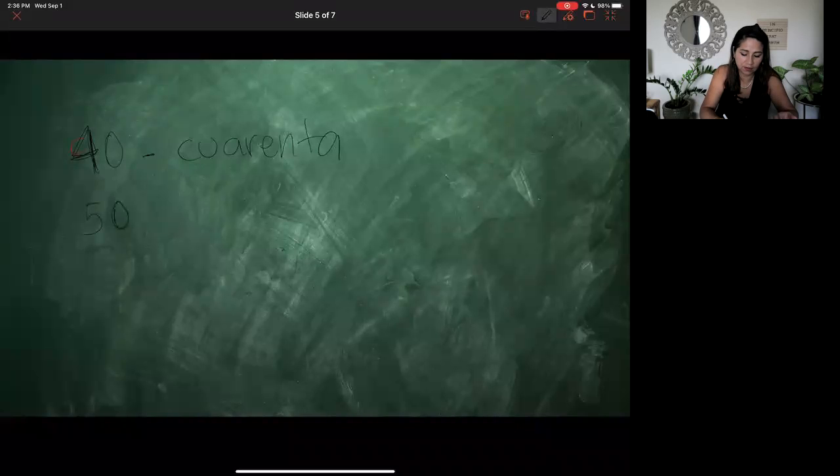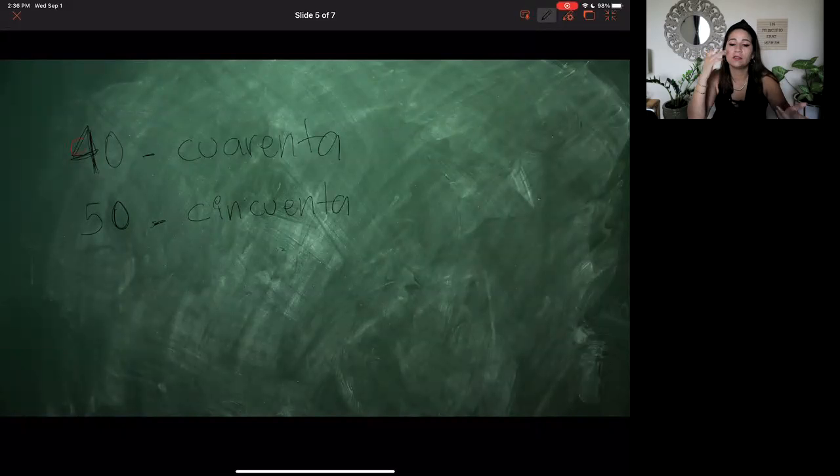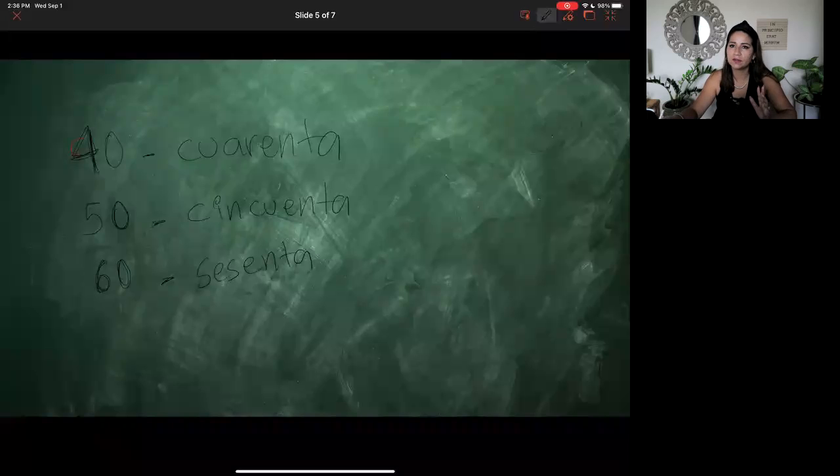If you reach fifty, the number is cincuenta. So cincuenta y uno, cincuenta y dos, and so forth. And then for sixty, if you're curious, the number is sesenta. Okay, in another video I will show you guys how to do numbers up to one hundred, but so far you basically only need to know up to thirty for this part of the chapter.